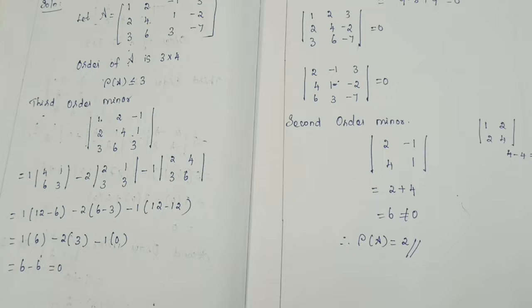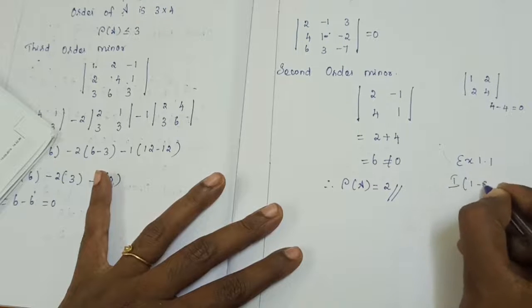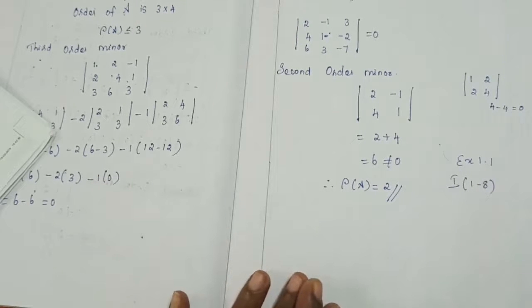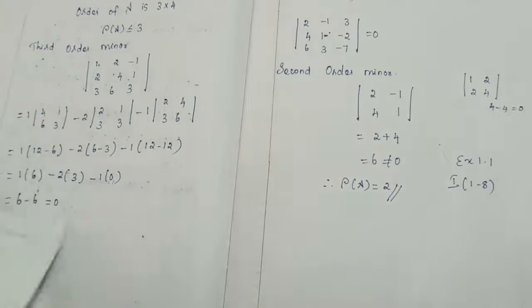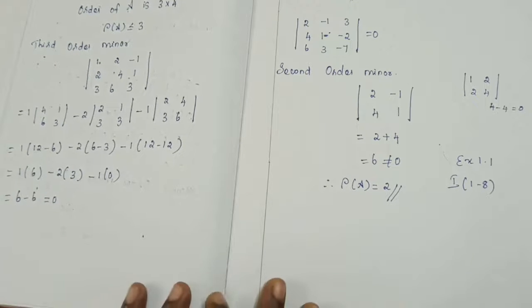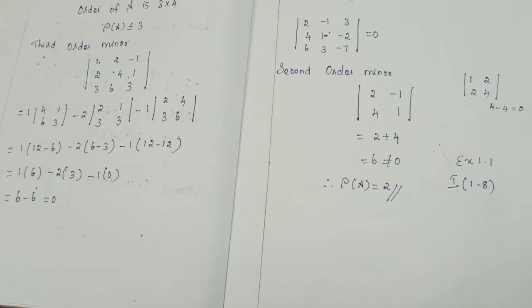Go through exercise 1.1. There are 8 problems: find the rank of each matrix. We are going to practice 4 problems using this method and 4 problems using the next section method. Take down your home assignments: from exercise 1.1, do questions 1, 3, 4, and 6.